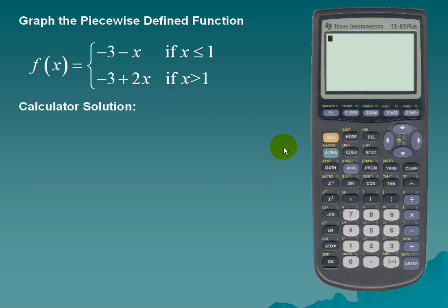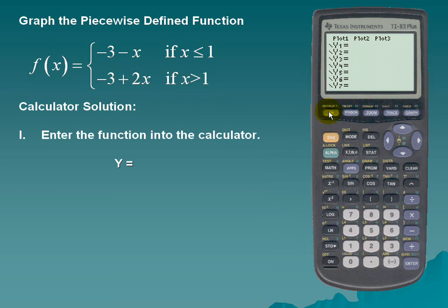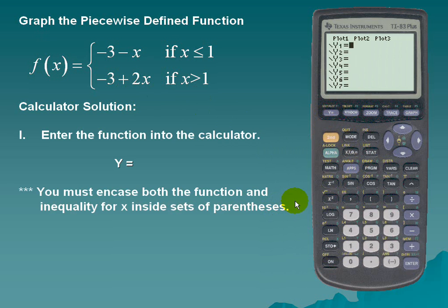Let's take a look at the calculator solution. First, we'll enter the function into the calculator in the Y= section. We must encase both the function and the inequality in a set of parentheses. The first piece of our function is negative 3 minus x, so we'll enter that as negative 3 minus x, then close the parentheses. We'll also put our inequality in a set of parentheses.